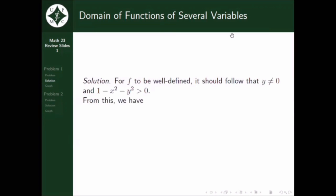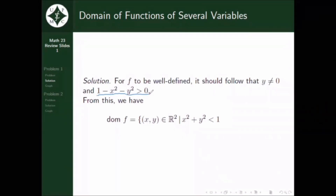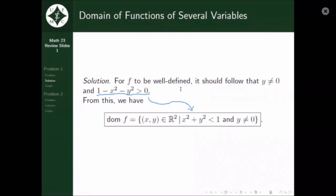From this we have the domain of f, which is equal to the set containing ordered pair xy where x and y are reals, such that x squared plus y squared is less than 1 — strictly less than 1. That inequality comes from manipulating the condition that 1 minus x squared minus y squared is greater than 0. And aside from that, we should also state that y is non-zero.